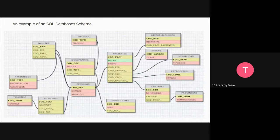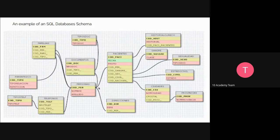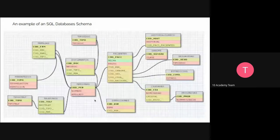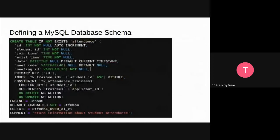Here is an example of a SQL database schema. This shows the relationships between different attributes, where each and every element is connected to other types of data schema, showing the higher-level relationships between the database schema. This is a SQL schema. Let's define a database schema — one example here is defined in MySQL, where we define a table and create a database if it doesn't already exist. This is just one example of how we can create a database schema for our project this week.